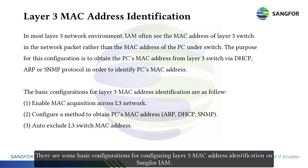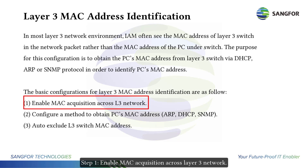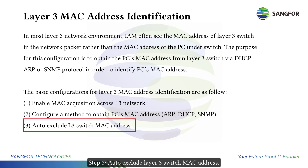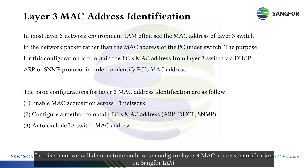There are some basic configurations for configuring layer 3 MAC address identification on SAN for IAM. Step 1: enable MAC acquisition across layer 3 network. Step 2: configure a method to obtain the PC's MAC address. Step 3: auto exclude layer 3 switch MAC address. In this video, we will demonstrate how to configure layer 3 MAC address identification on SAN for IAM.